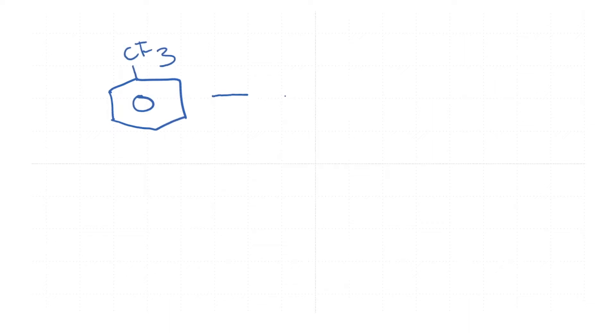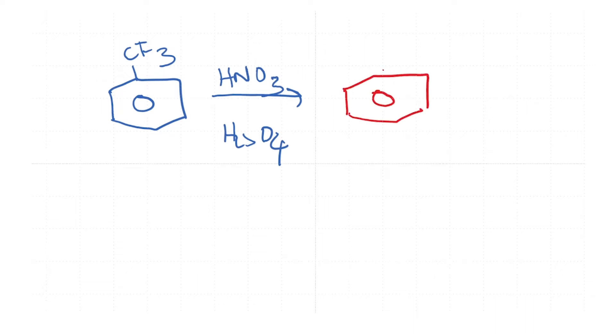Let us try and understand what happens when we have an electron withdrawing group. The example we want to look at is the CF3 group. When we carry out nitration using HNO3 and H2SO4, the product formed is CF3-substituted nitrobenzene with a yield of 96%. This reaction works very well and gives exclusively one product, which is the meta-substituted product.